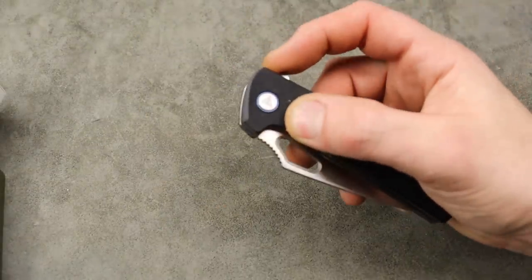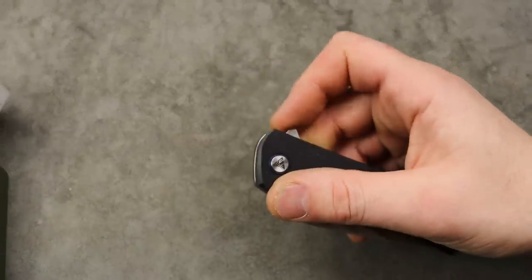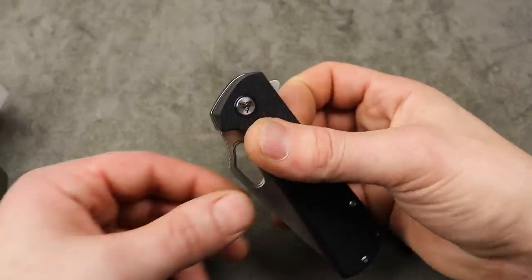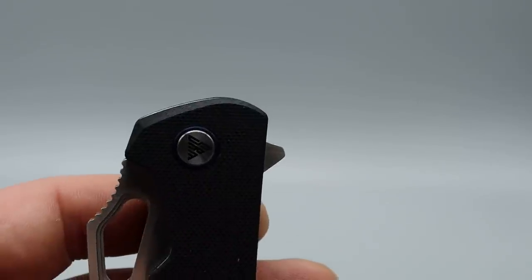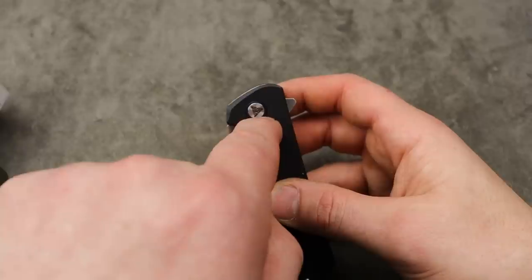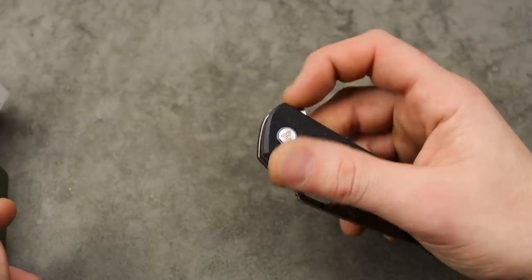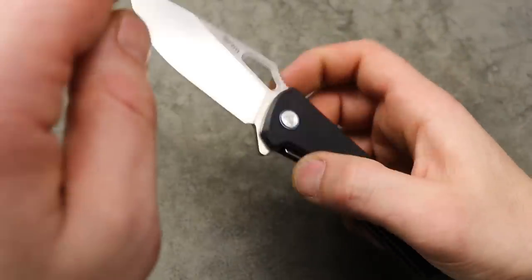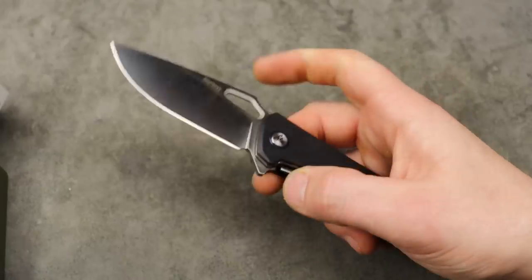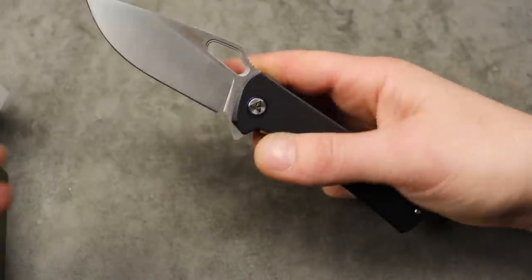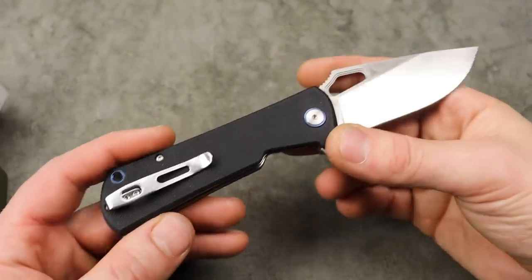Then you have the flipper tab. Now the flipper tab also works really good. Very reliable, very snappy. I will say the leverage point is about even with the center of the pivot. You usually want to try to get a little bit higher than the pivot. So it can be failed, but it's also nice and snappy and just fine. You would have to intentionally try to fail it.